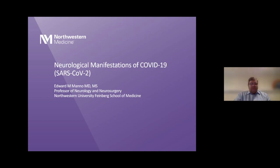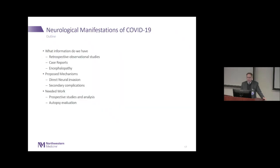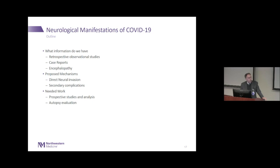Good morning. I'm Ed Manno and I'm going to be talking about neurological manifestations of COVID-19, or the SARS-CoV-2 virus. The information we have comes primarily from retrospective observational studies and case reports. One finding is that severe patients have a very severe agitated delirium — whether that is secondary to COVID-19 or just a process seen with severe viral pneumonias is unclear.